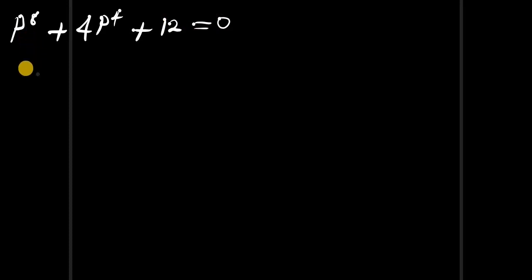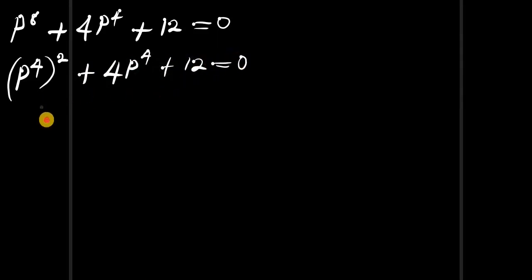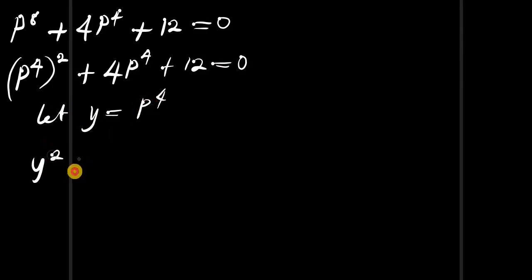Now we solve p^8 plus 4 times p^4 plus 12 equals zero to find the other values. We rewrite p^8 as p to the power of 4, all squared, giving p^4 squared plus 4 times p^4 plus 12 equals zero. We let y equal p to the power of 4, giving y squared plus 4y plus 12 equals zero.